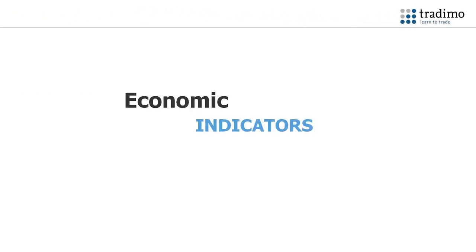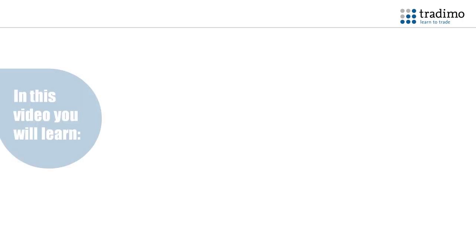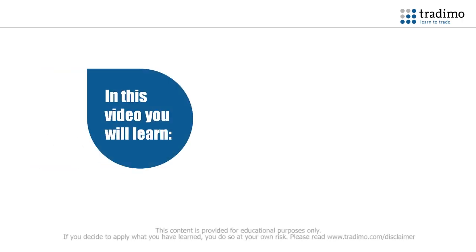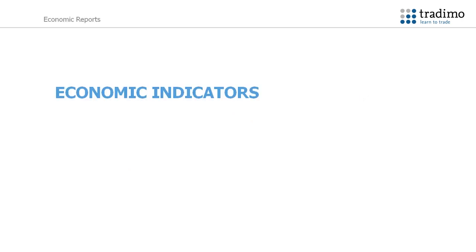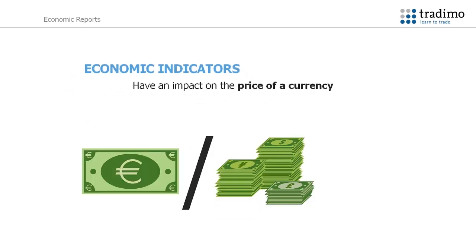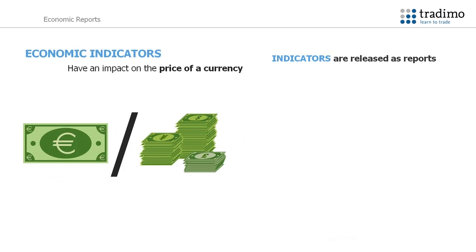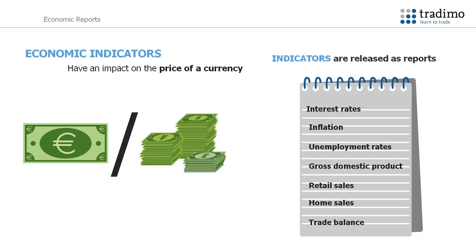Economic indicators. In this video you will learn that economic indicators of a country affect the value of a currency and they are released as reports. We will discuss the following economic indicators: interest rates and inflation. Economic indicators measure how strong an economy is, and the strength of an economy has an impact on the value of the currency. These indicators are released as reports and the publishing times are released ahead of the actual publication.